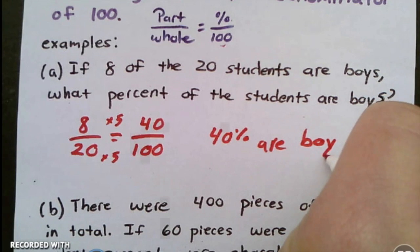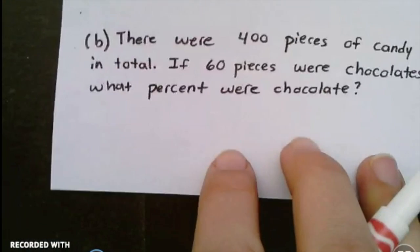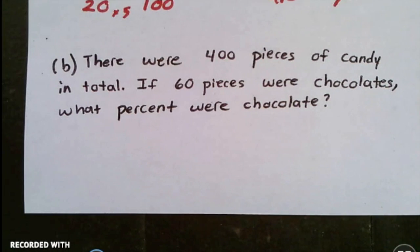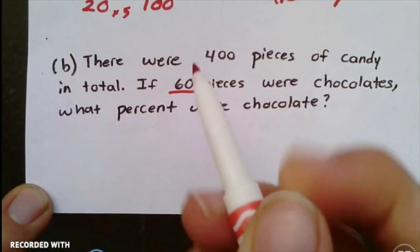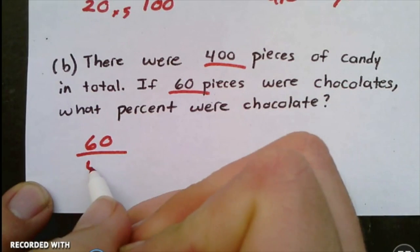The part over the whole: there were 400 pieces of candy in total. If sixty pieces were chocolates, what percent were chocolates? First let's talk about the part. The part is the sixty. If we put it over the whole, which is 400...